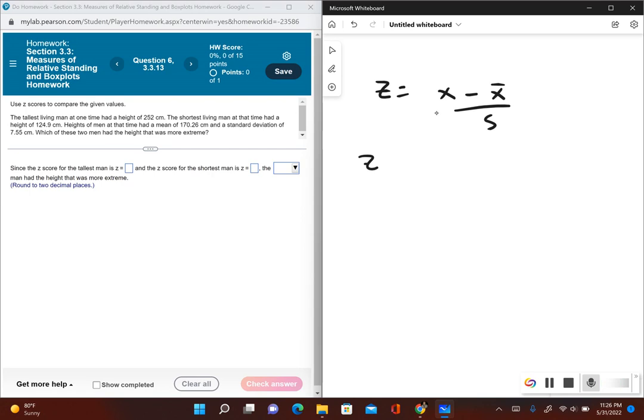So for the tallest man, that converts to his z-score of, so what was his height? It was 252 centimeters, so we have 252 minus the mean, which is 170.26, and then we divide it by the standard deviation, which is 7.55. So let's see what this gives us. I have 252 minus 170.26, so I'm going to subtract the numerators first, and then I'll divide it by the standard deviation.